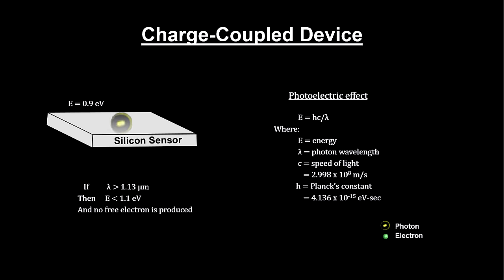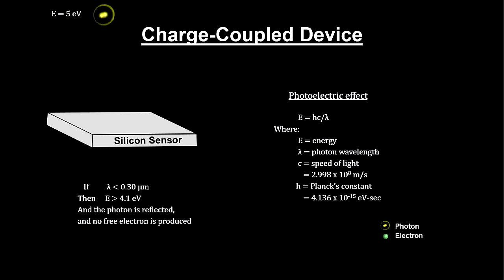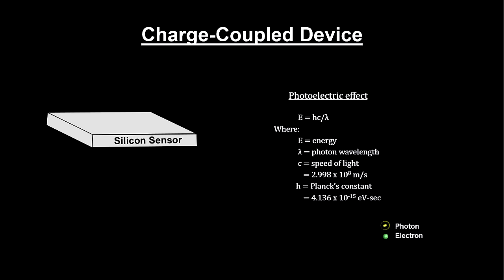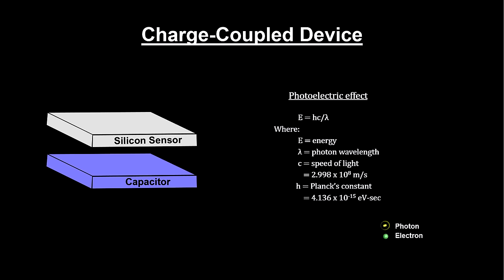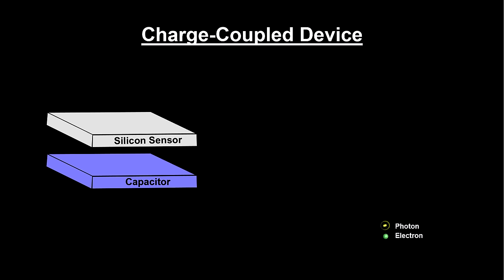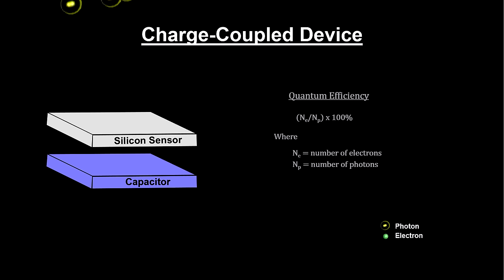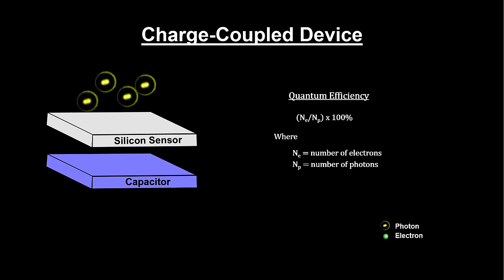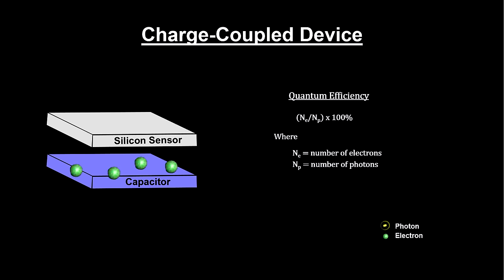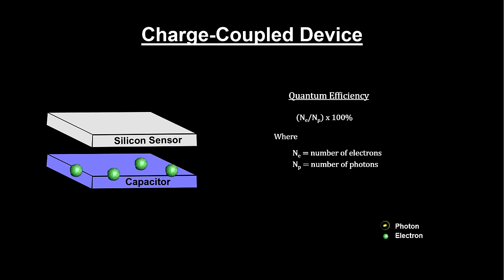CCDs use a thin wafer of silicon to produce electrons from photons because silicon easily releases electrons with visible light. A tiny positively charged capacitor is attached to the silicon wafer in order to collect the freed electrons. If we get one electron for each photon in the range, we'd have 100% quantum efficiency. The highest quality CCDs can achieve up to 90% quantum efficiency. It's interesting to note that the quantum efficiency of the human eye's rods and cones is only 1%.